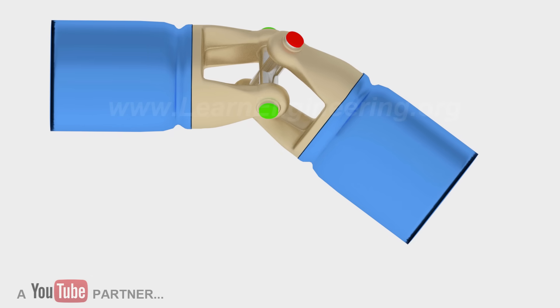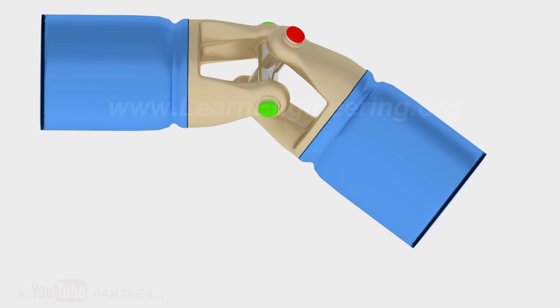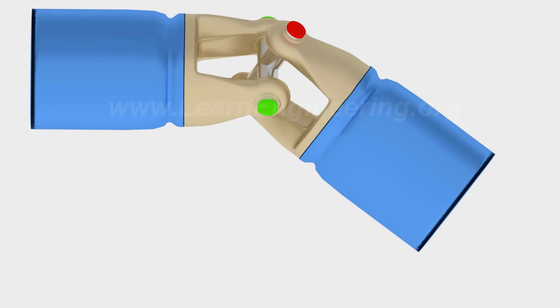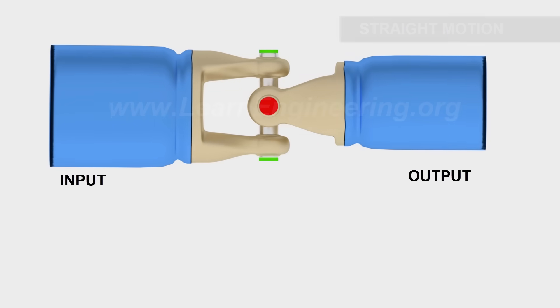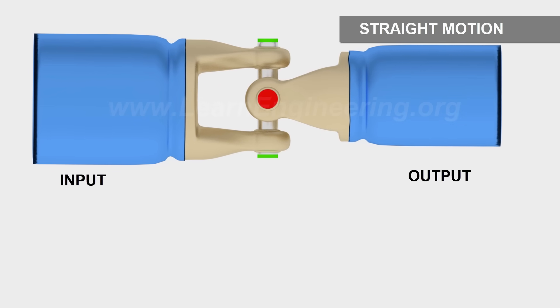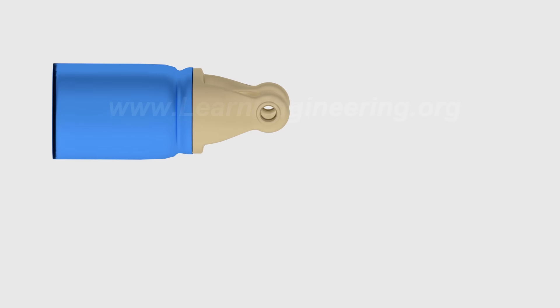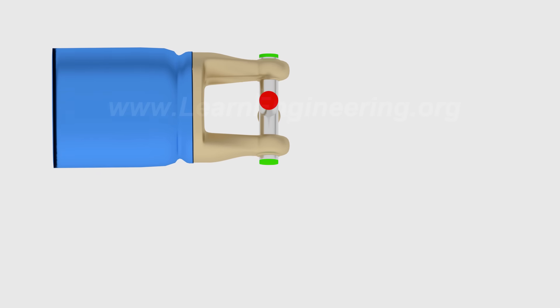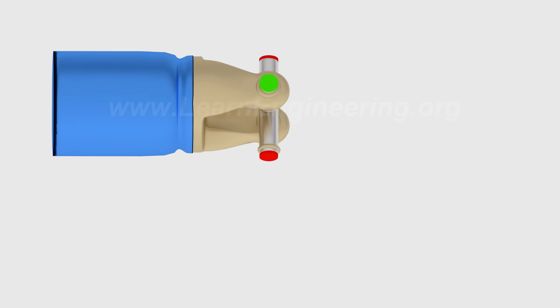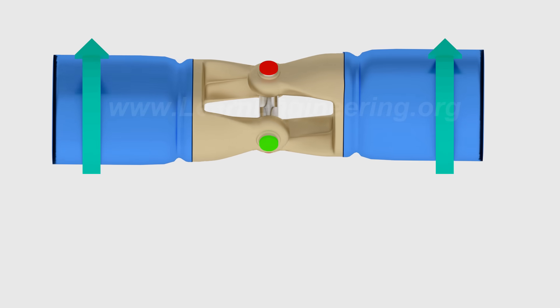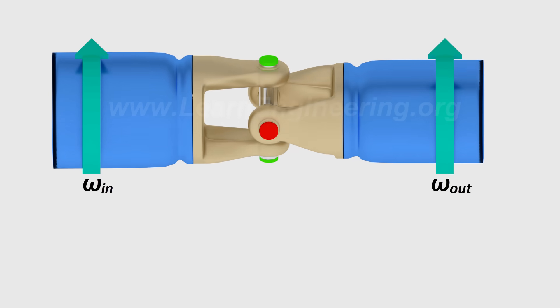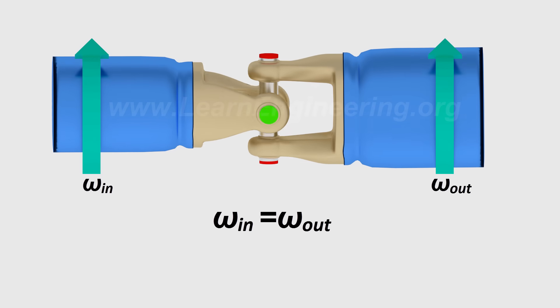Now, let's consider different power transmitting scenarios. In the first case, the input and output shaft are connected in a straight line. In this case, motion is really simple. The input shaft will turn the cross and the cross will turn the output shaft. It is clear that both the input and output shafts will turn at the same speed.